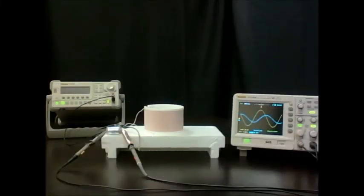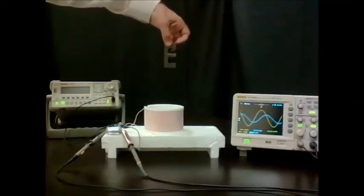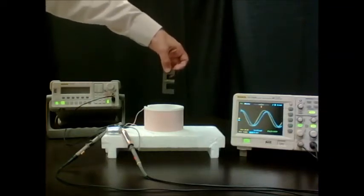What happens with materials that really interact with the field. I have here a ferrite core, and I will bring it close to the coil. As you can see, there is a large frequency shift.